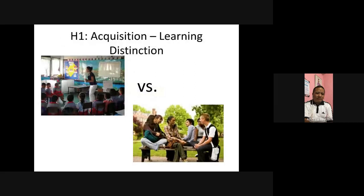His first hypothesis is the acquisition-learning distinction — that language acquisition is different from language learning. He makes a difference between language acquisition and language learning, although in general we use them interchangeably. But for Stephen Krashen, learning is like the picture on the left, where you learn the rules, you learn the grammar. There's explicit learning.